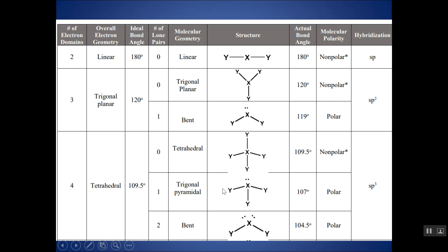You can see all the information relating to trigonal pyramidal geometry on the chart. If instead of having one lone pair there were two, the name would be bent, and you can see a 3D structure of what that might look like along with the bond angles. You would only need to memorize 2, 3, and 4 domains for this class — your chart also shows 5 and 6, but you won't have to memorize those going forward.